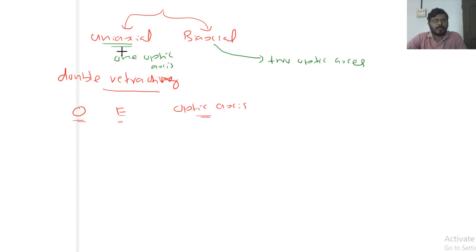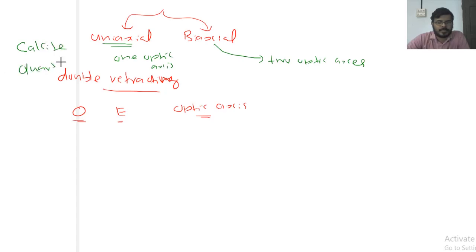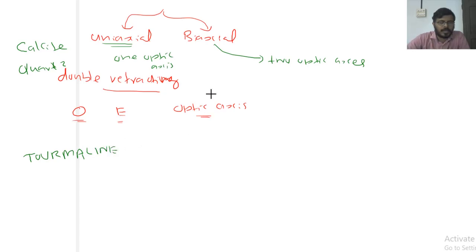Examples of uniaxial crystals are calcite, quartz (Q-U-A-R-T-Z), and tourmaline (T-O-U-R-M-A-L-I-N-E). For biaxial crystals, an example is topaz (T-O-P-A-Z).